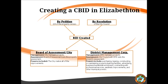I hope at this point I've piqued enough interest in a Central Business Improvement District to make you wonder: how do we create one? Tennessee Code Annotated gives us direct instructions on how to create a Central Business Improvement District. There are two ways it can be created: one, by a petition of three-quarters of the property owners, or two, by resolution of City Council. Either of those scenarios will allow for the creation of a Central Business Improvement District.